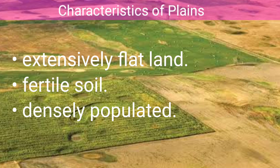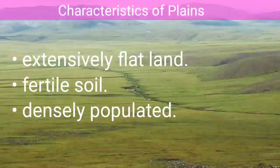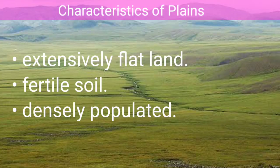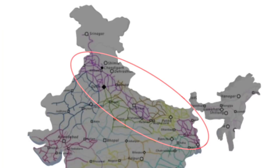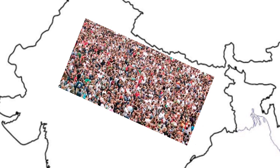Plains have different characteristics: extensive flatland, fertile land, and very dense population. Because of the extensive flatland, transportation is much more developed and fertile soil makes agriculture much more developed. For example, the northern plains of India have a dense network of transportation as well as the presence of fertile soil, which influences agriculture in this area and supports a large population.